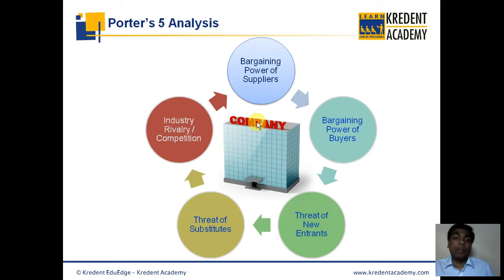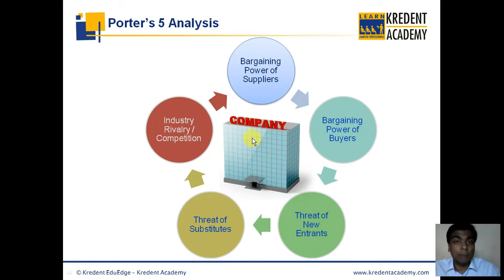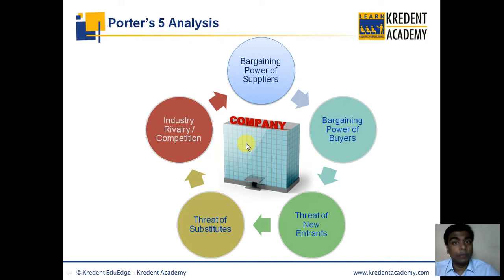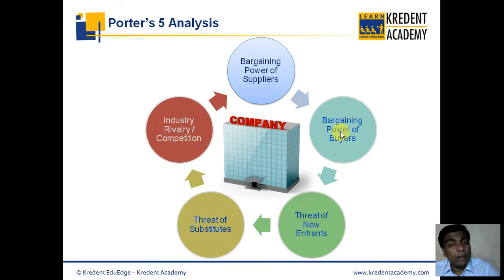If the bargaining power of suppliers is high, that means the supplier could demand terms and conditions beneficial to itself. As a result, the company being analyzed could face profitability issues — they might have to pay a higher amount to procure the same goods. So ideally, any company would like the bargaining power of its suppliers to be low.